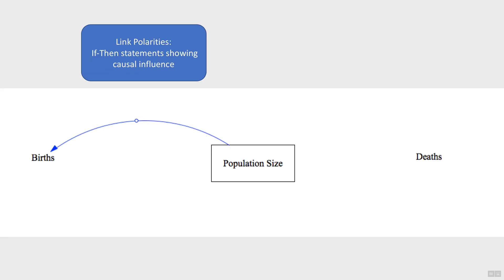The link polarities represent the causal relationship between the variables, or another way of looking at them is that they're if-then statements. Thinking back to the connection circle activity, we can ask ourselves which variables have a causal relationship, meaning changes in one variable causes changes in another variable.